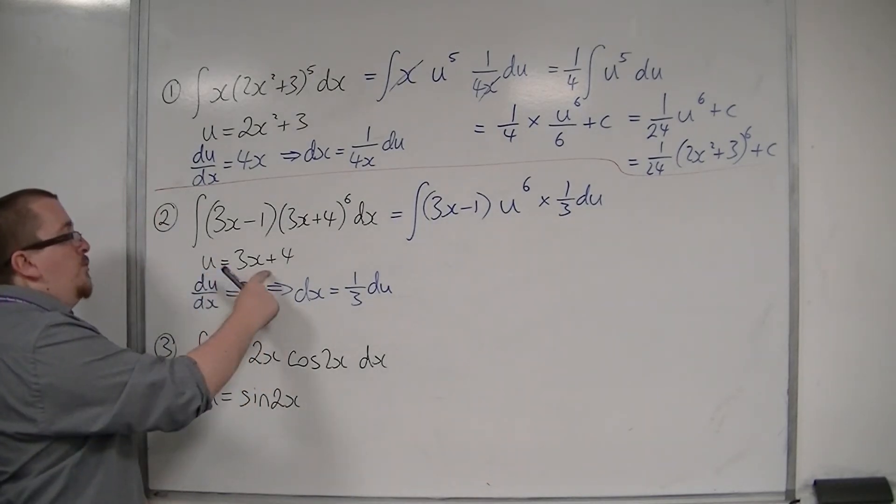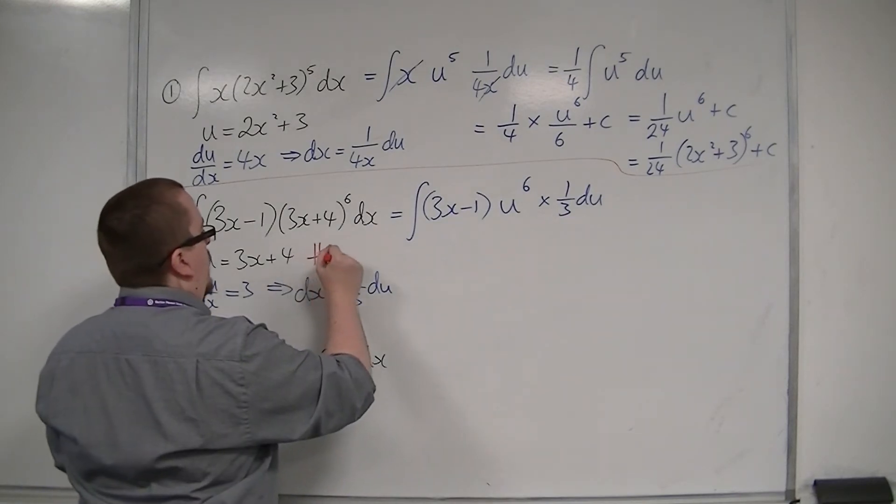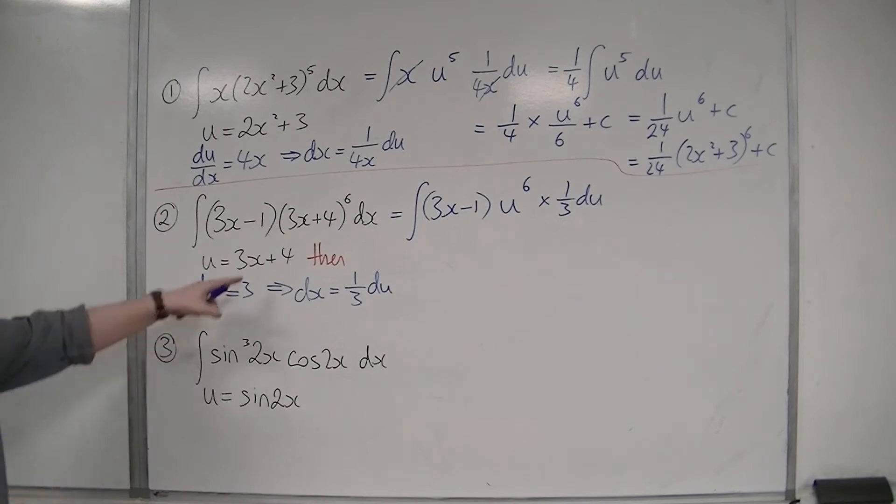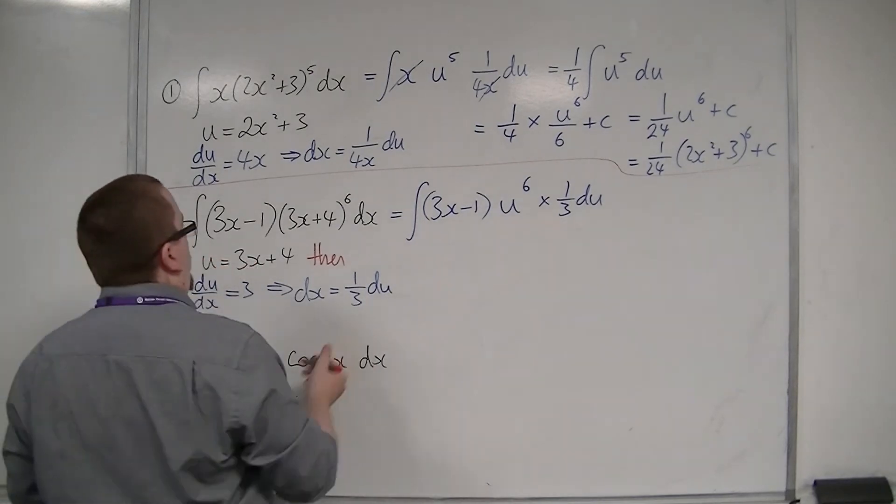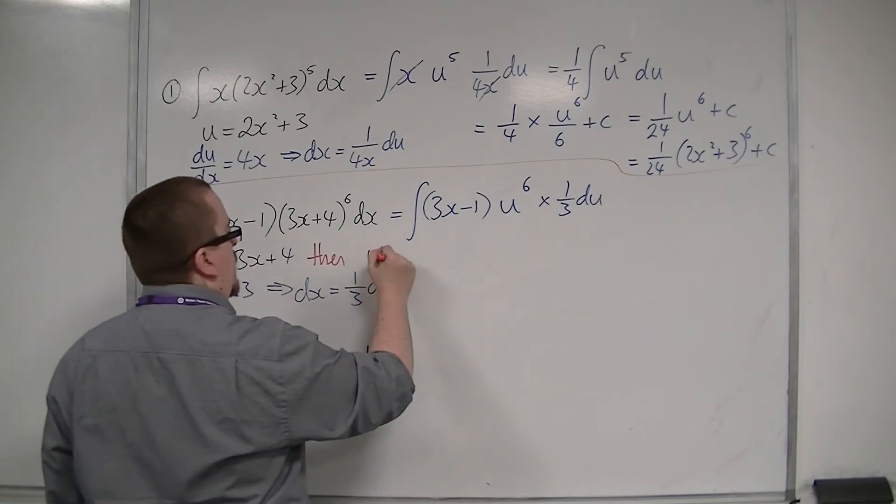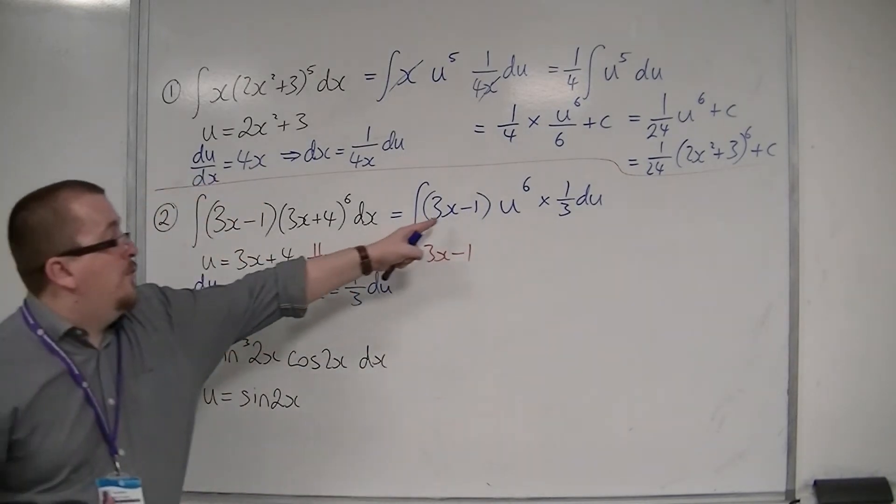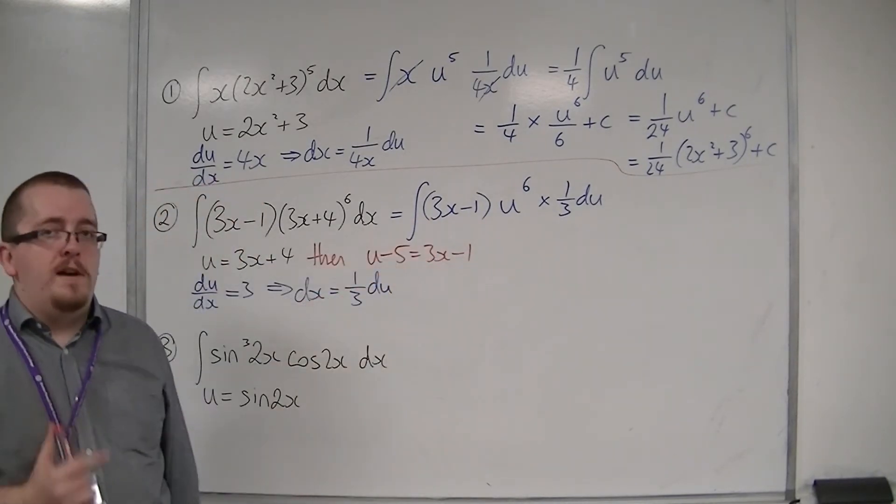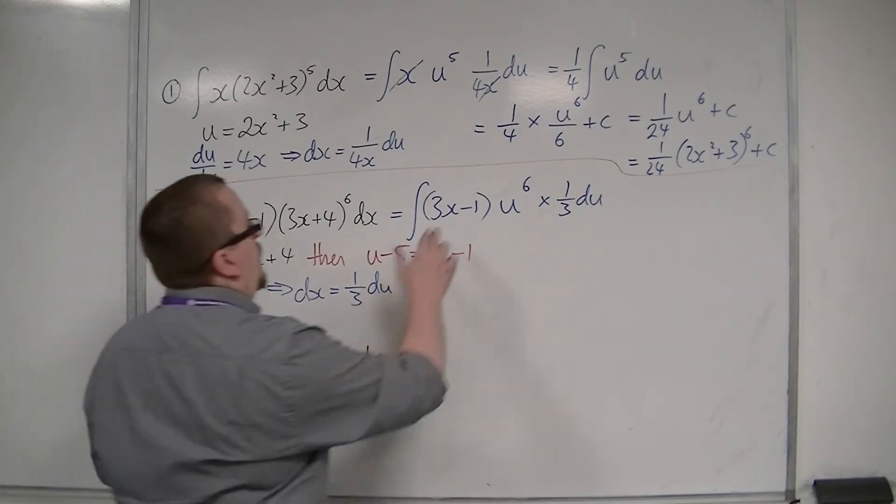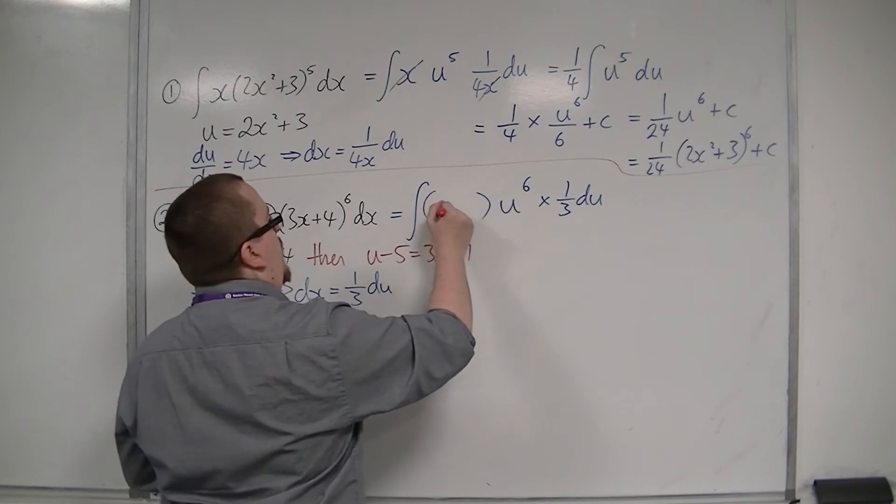Now, if u is equal to 3x+4, then if I subtract 5 from both sides, so that I then end up with 3x-1, that means that I can replace the 3x-1 with u-5. So I can get rid of that and write u-5 instead.